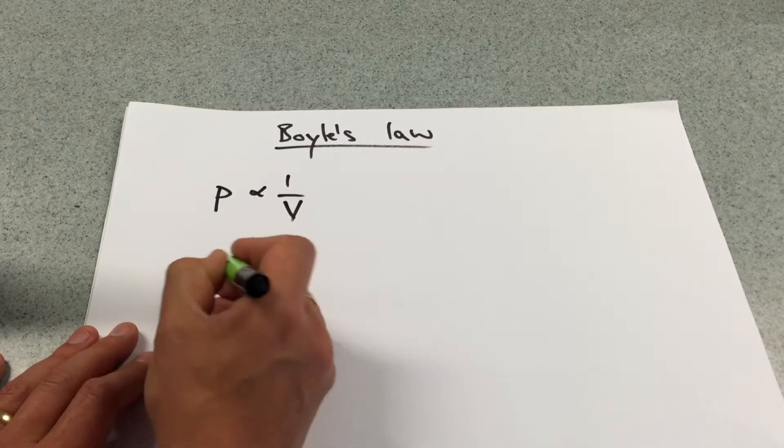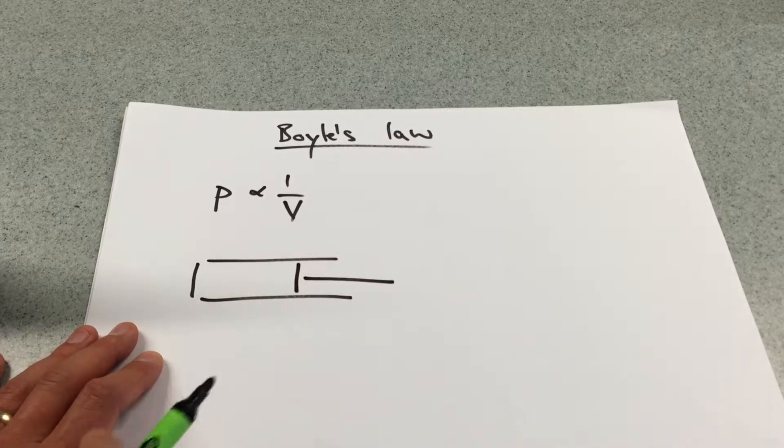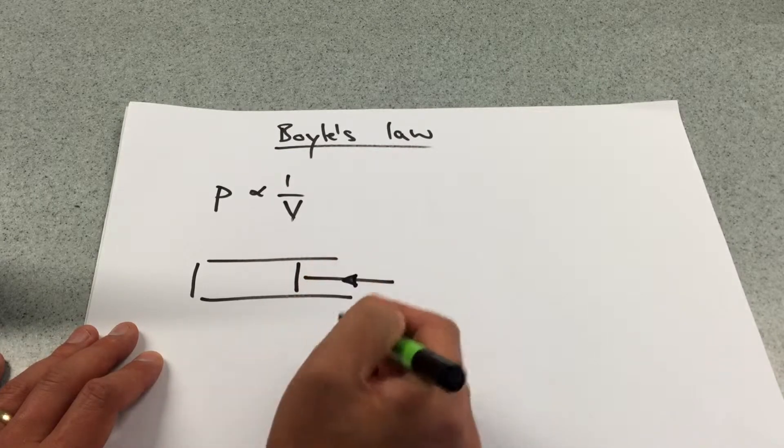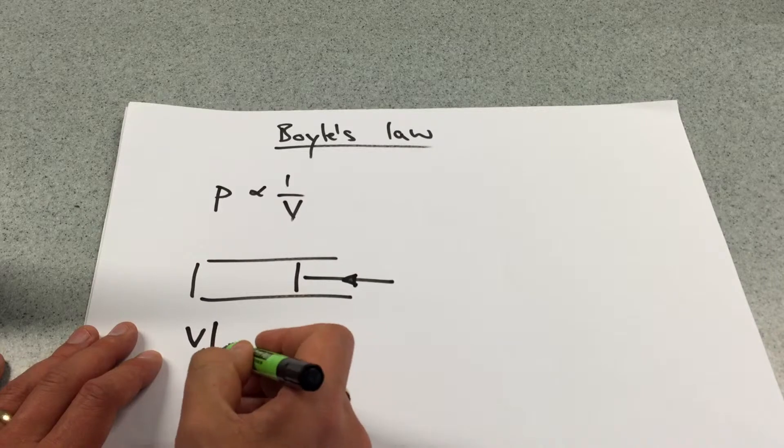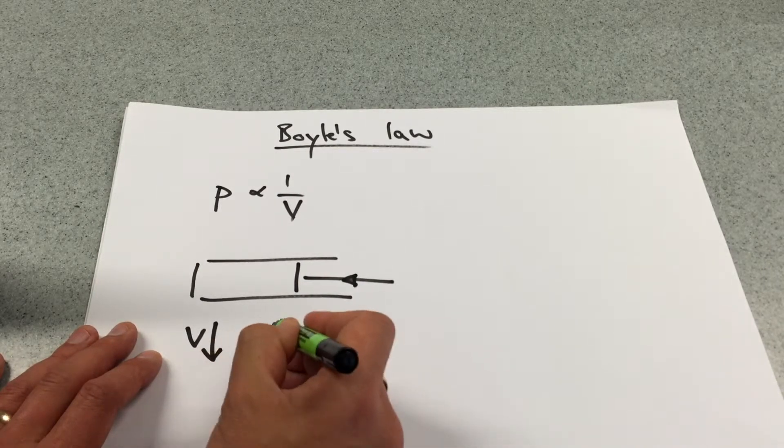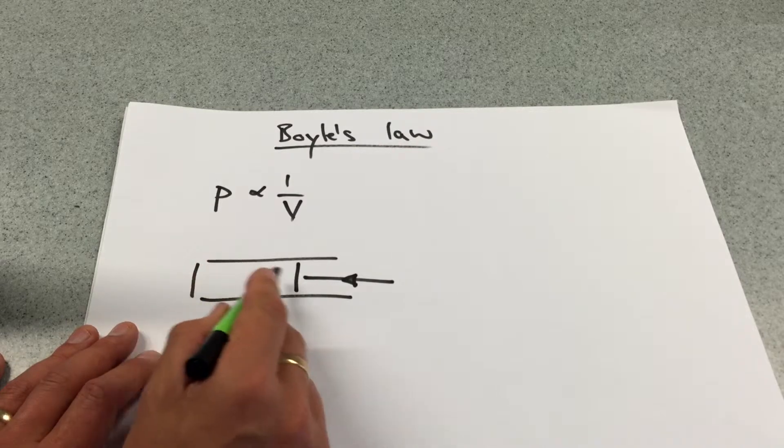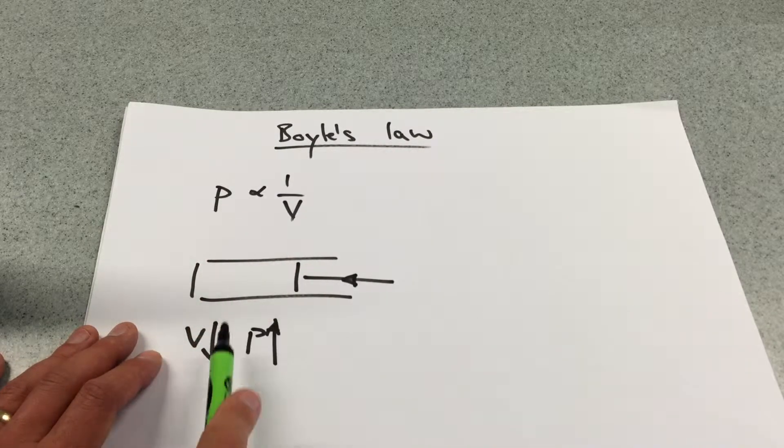So if I were to have say a piston and I were to have this movable end, if I was to push that in, thereby making the volume decrease, the pressure in turn would increase because the particles would be bouncing around and bouncing off the sides much more rapidly, much more readily, and therefore increasing the pressure.